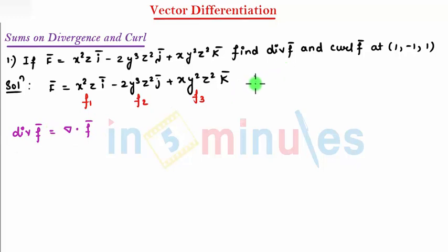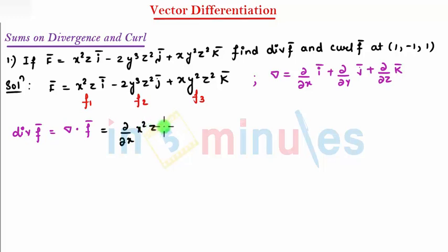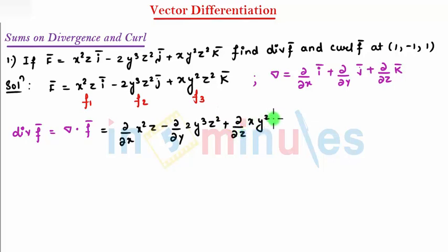We know what del is. My del is (∂/∂x) î plus (∂/∂y) ĵ plus (∂/∂z) k̂. We just need to do the dot product of del and f̄, which comes to be (∂/∂x)(x²z) plus minus (∂/∂y)(2y³z²) and the third term is plus (∂/∂z)(xy²z²).